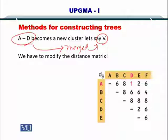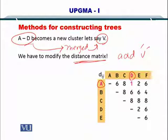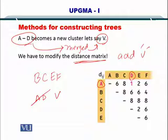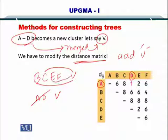Since A and D have been merged into V, they have to be removed from the distance matrix and V has to be added. The updated matrix will now contain V, B, C, E, and F. To add V to this distance matrix, we need to compute the distances: V and B, V and C, V and E, and V and F.